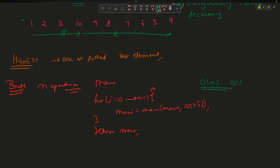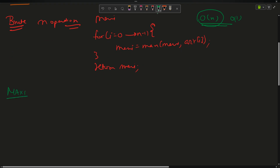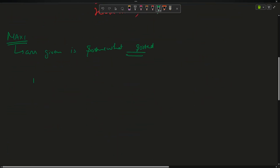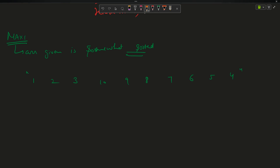I want to optimize it further. O(n) time is decent, but I can see that the array given to me is somewhat sorted — not exactly sorted, but sort of sorted. For example: 1 2 3 10 9 8 7 6 5 4. Whenever you want to search and the array follows some type of sorted path, that means you will likely need binary search — 99.9% of the time.